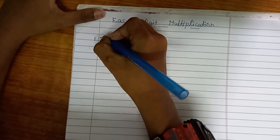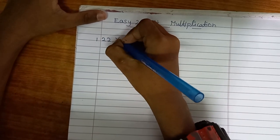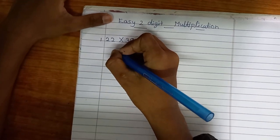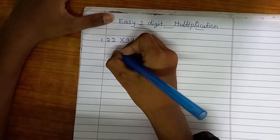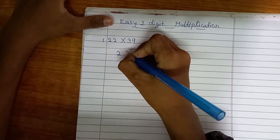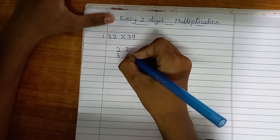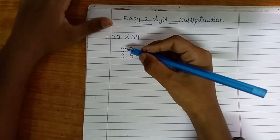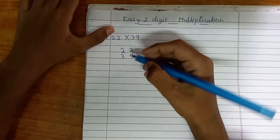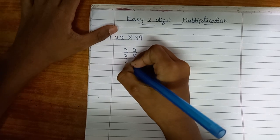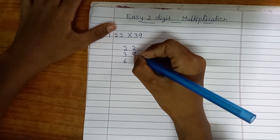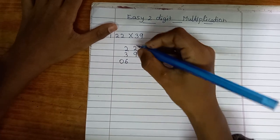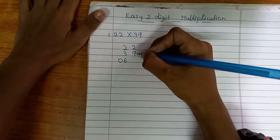22 multiplied by 39. First, write it like normal multiplication. Now you have to do first 2 multiplied by 3, which is 6, but it has to be 2 digits, so 06. Then 2 times 9 is 18.